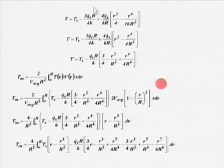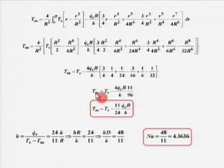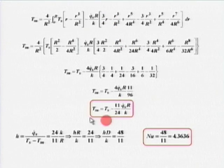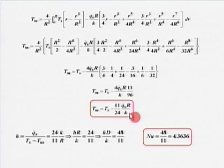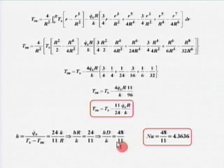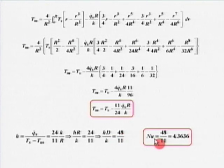After performing the integration — a straightforward but tedious integral — I get T_m = T_s − (11/24)(Q_dot_s R/k), which gives T_s − T_m = (11/24)(Q_dot_s R/k). Therefore h = Q_dot_s/(T_s − T_m) = 24k/(11R). Defining Nusselt number as hD/k instead of hR/k (multiplying by 2): Nu = 48/11 = 4.364.